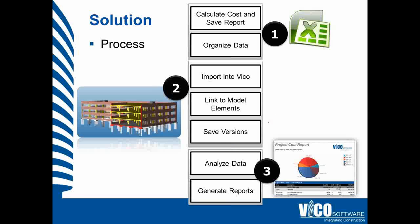First, we're going to calculate the cost as a first version in MC squared or Timberline, and save that information as an Excel spreadsheet. We'll then open that report, organize the data, and make the transition from columns into rows. In the next phase, we're going to import that information into VICO, giving us our first MC squared or Timberline version of the estimate inside the VICO environment.